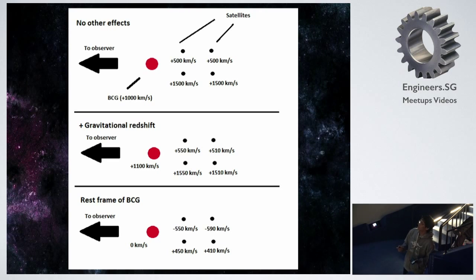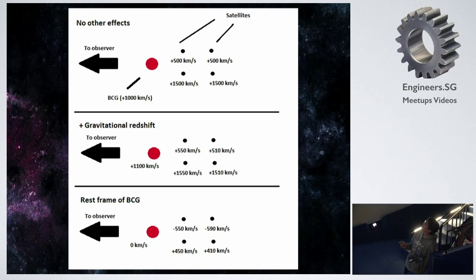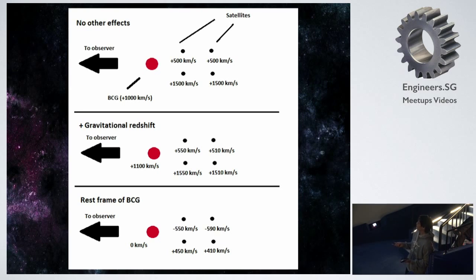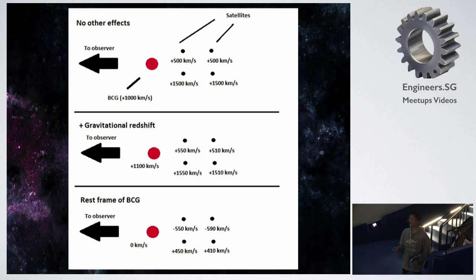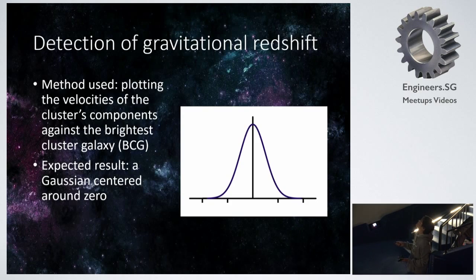Now we move to the rest frame of the BCG. In this frame, the BCG does not move. If we compute — subtracting — for example, 510 minus 1,100 gives you negative 590. The point is that the distribution is no longer centered around zero. There is a more negative part, and the positive part decreases. So the Gaussian from the previous slide is no longer around zero — it's now slightly to the left.